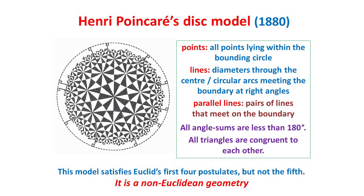Here, the points of the geometry are all the points lying inside the dotted bounding circle. The lines of the geometry are then of two types: they are either diameters through the centre of the circle — two of these can be seen here — or they are circular arcs which meet the bounding circle at right angles, and several of these are also shown. Parallel lines then turn out to be pairs of these lines that meet on the boundary, such as the two near the top right of the disk. In this geometry, there are many triangles, and in all of them, the angles add up to less than 180 degrees.